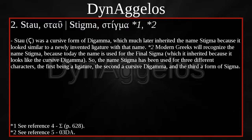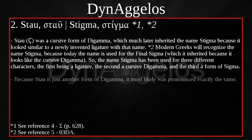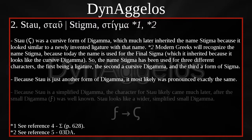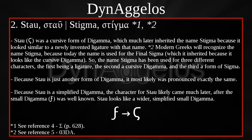STAO was a cursive form of DIGAMMA, which much later inherited the name STIGMA because it looked similar to a newly invented ligature with that name. Modern Greeks will recognize the name STIGMA, because today the name is used for the final sigma, which it inherited because it looks like the cursive DIGAMMA. So the name STIGMA has been used for three different characters: the first being a ligature, the second a cursive DIGAMMA, and the third a form of sigma. Because STAO is just another form of DIGAMMA, it most likely was pronounced the same — W as in 'cow.' STAO looks like a wider, simplified small DIGAMMA.